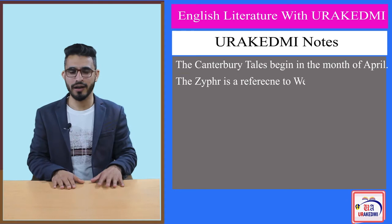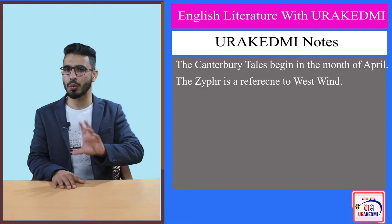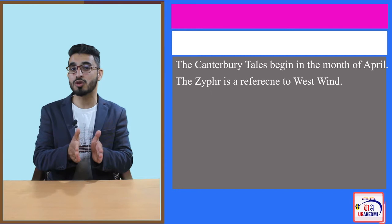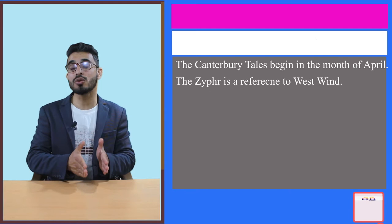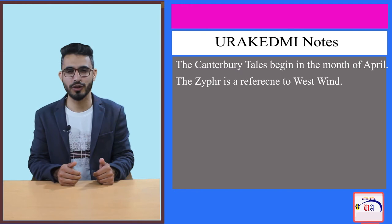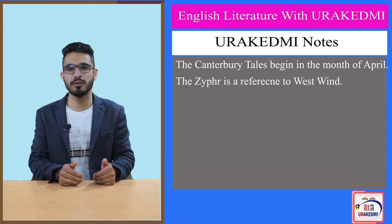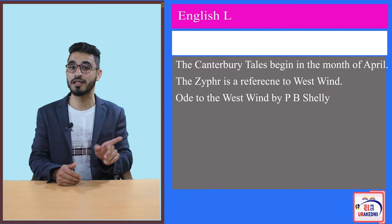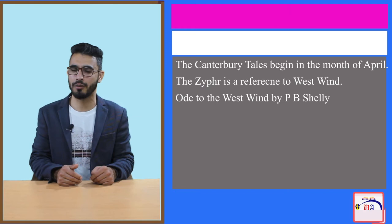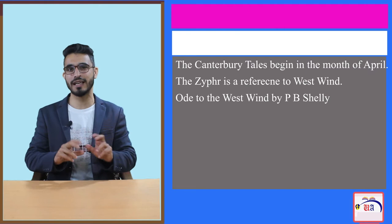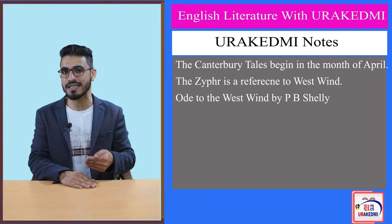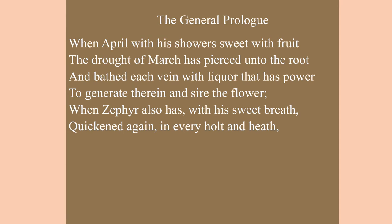Zephyr also has with his sweet breath quickened again. This Zephyr is a reference to the west wind. This west wind is not as cold and harsh as the winter wind. It has the ability to regenerate. There is a poem written in praise of the west wind by P.B. Shelley — the Ode to the West Wind — which you will likely study in coming semesters. This west wind, referred to at the very beginning of the Prologue, is again a reference to regeneration and life returning to normalcy after harsh winter.